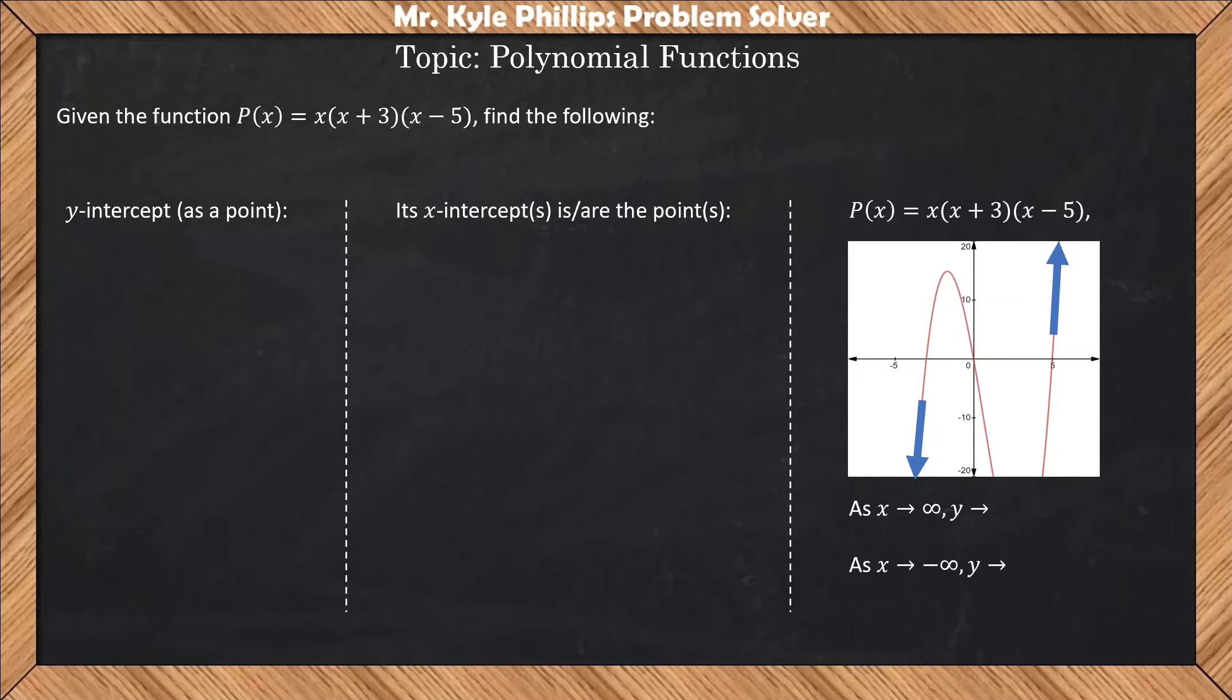Hey everybody, so in this video we are going to be talking about finding certain characteristics of polynomial functions. So they give us the problem, given this function P(x) equals x times (x plus 3) times (x minus 5), find the following.